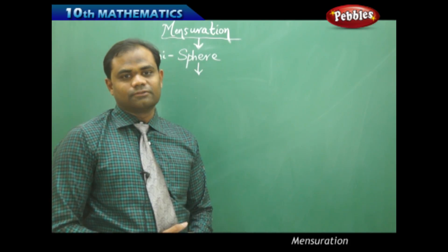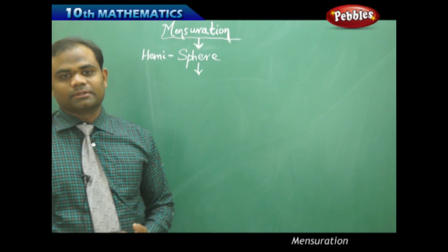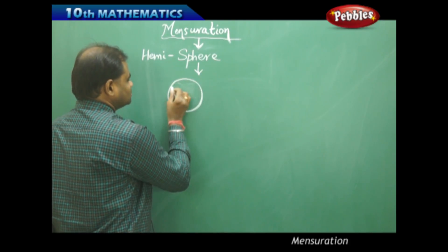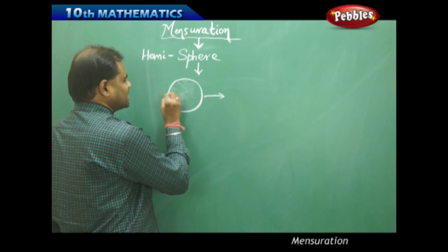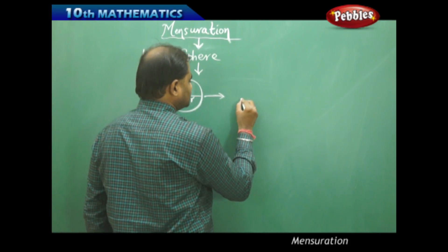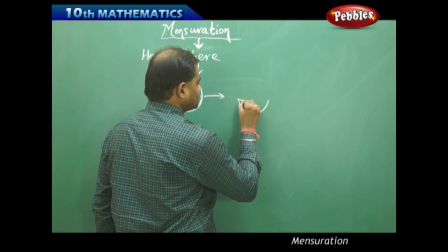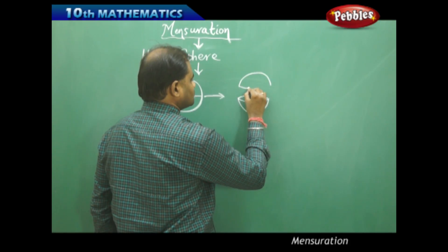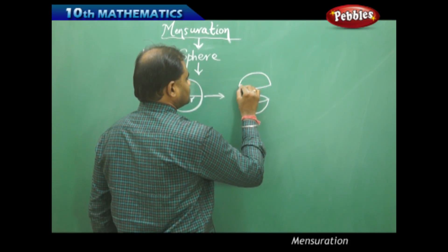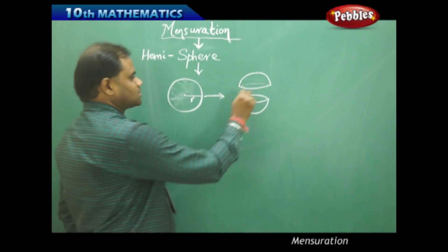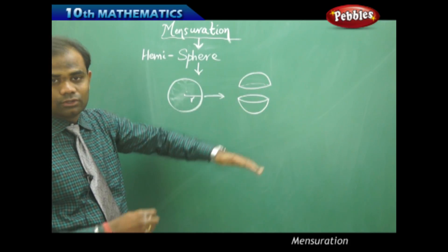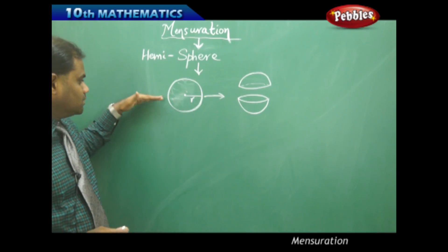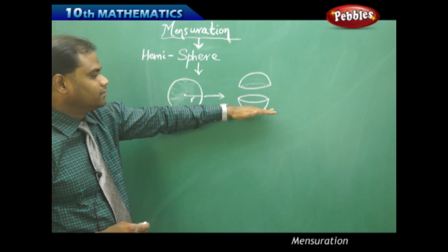Hemisphere. Now what happens if I cut the sphere exactly in the middle? When I take a sphere and cut it exactly through its diameter with radius r, I get two regions — the upper region and the lower region. Cutting exactly along the diameter gives two regions which are hemispheres.